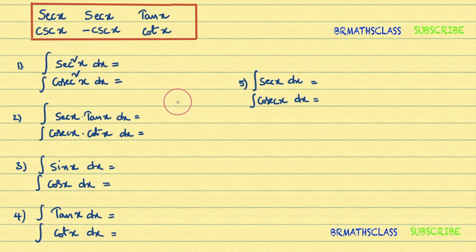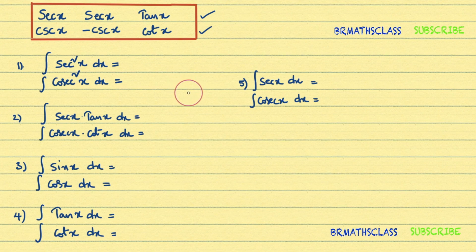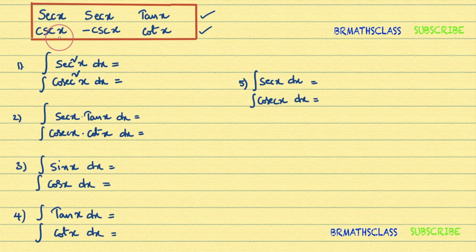In this class we will learn integrals of 10 trigonometric functions by using a trick. With this trick we can memorize integrals of these 10 trigonometric formulas very easily. Observe this table: secant x, secant x tan x in the first row; secant x, secant x tan x in the second row; cosecant x, minus cosecant x cot x. Remember this pattern so that we can memorize all these things very easily.